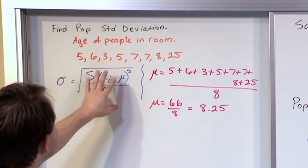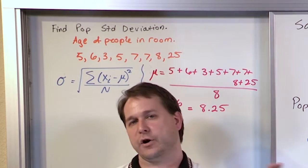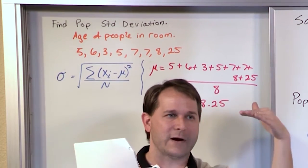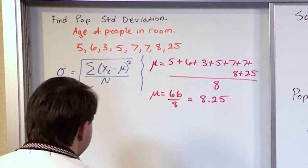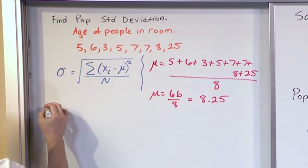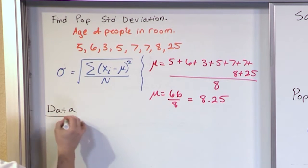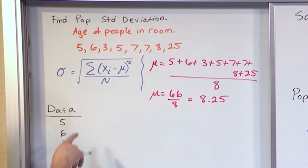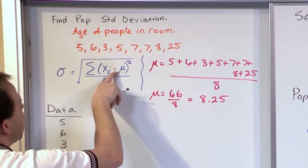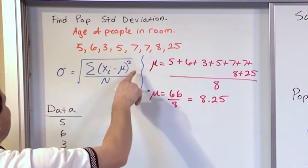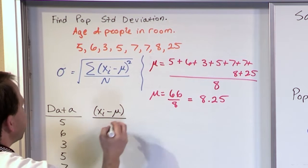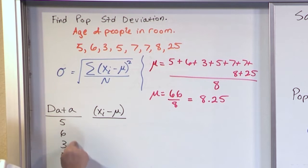The way I've been showing you before is to write it all out with parentheses and squaring, and that's great, but when you have a large amount of data points it can be very helpful to write it in table form. You'll see that in your book a lot, and I want to do it that way at least once. So the way it's convenient to do it: you write your data down again — 5, 6, 3, 5, 7, 7, 8, and 25 — and then for each data point you subtract the mean, then you square it, then you add everything up.